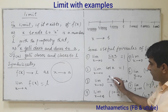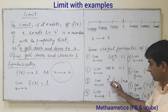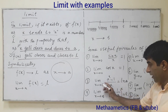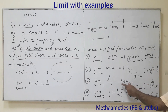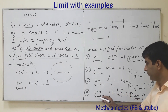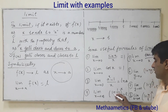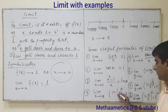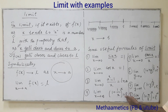Formula 2 — limit as x tends to 0 of (a^x minus 1) upon x equals the natural log of 'a'. Formula 3 — limit as x tends to infinity of (1 plus 1 upon x) whole power x is equal to e.